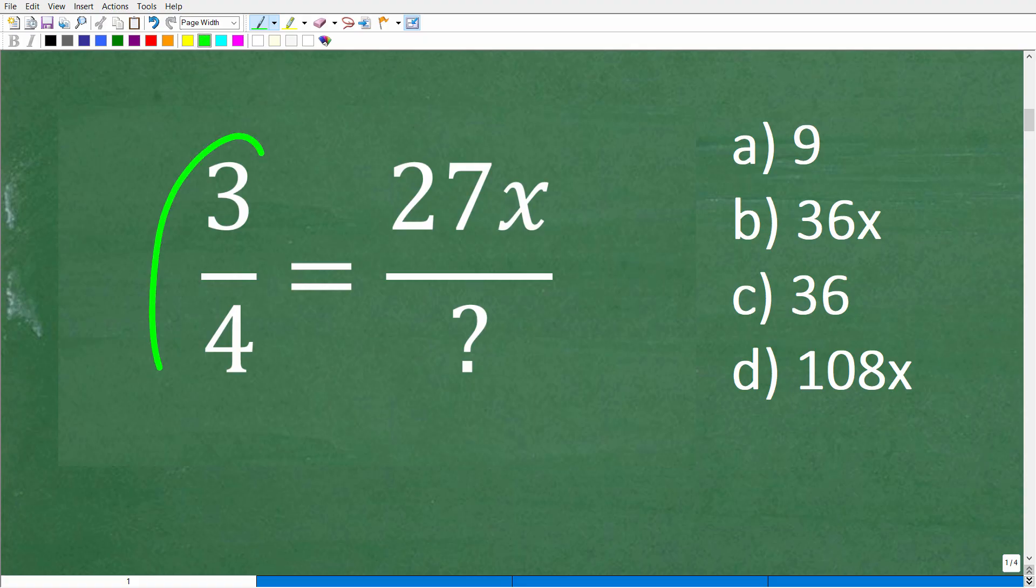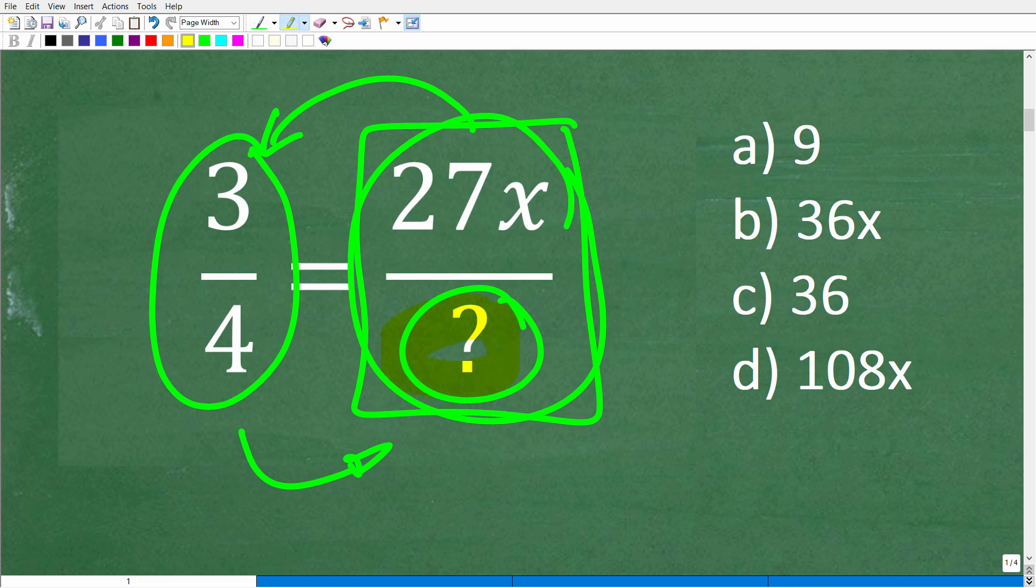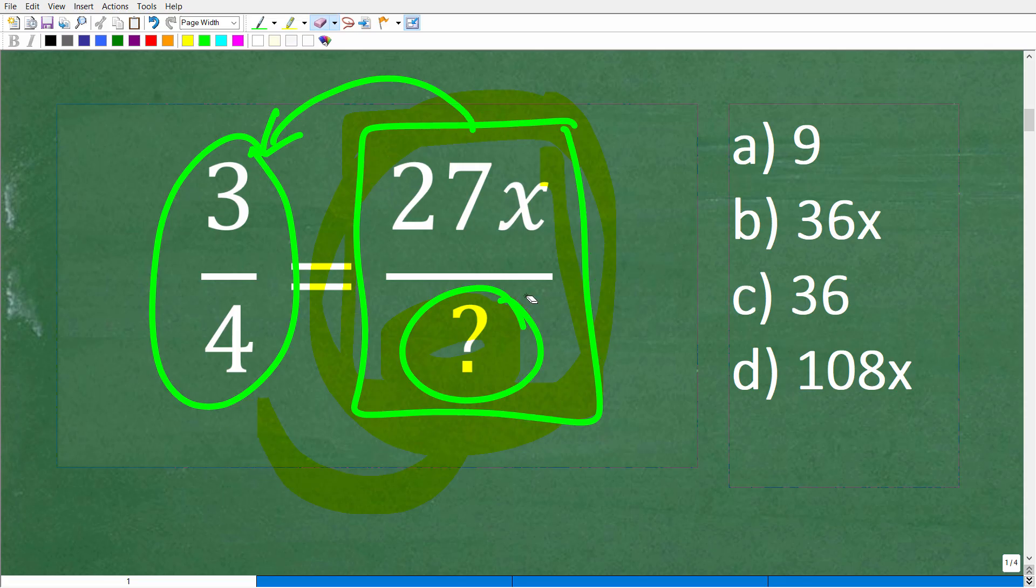We have a fraction, three-fourths, and we have this other fraction, 27x over something. What is this problem asking us? Whatever this fraction is, it's the same as three-fourths. So we have to figure out the denominator such that when we reduce this fraction, we get back to three-fourths.